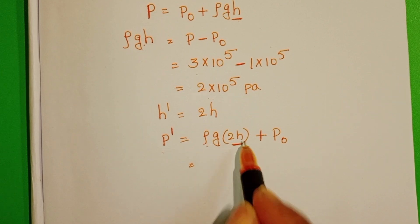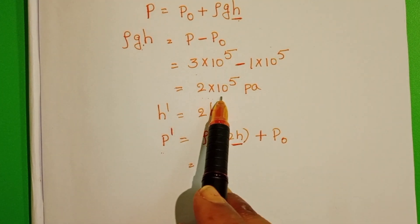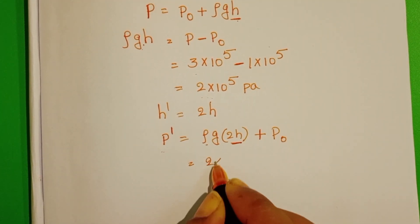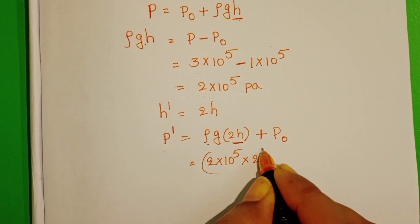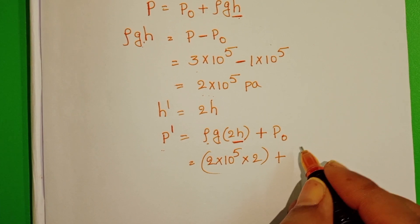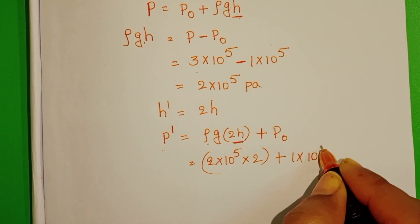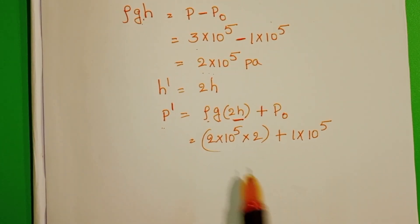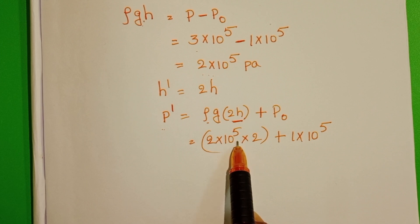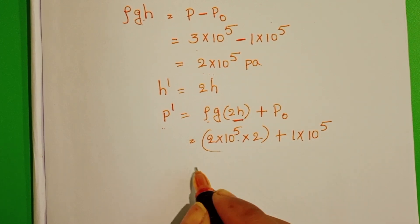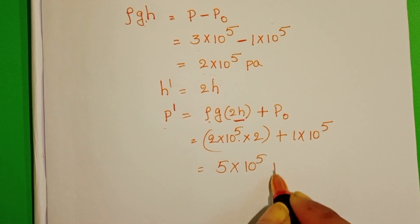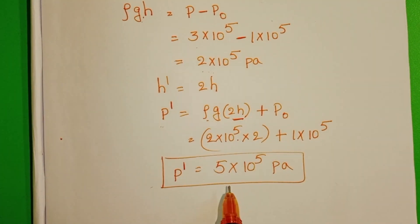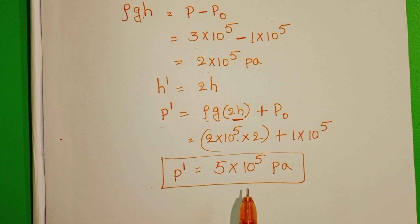Since ρgH equals 2 × 10⁵, we get ρg × 2H equals 2 × 10⁵ × 2, plus atmospheric pressure 1 × 10⁵. That gives 4 × 10⁵ plus 1 × 10⁵ equals 5 × 10⁵ pascal — the total pressure when depth is doubled.